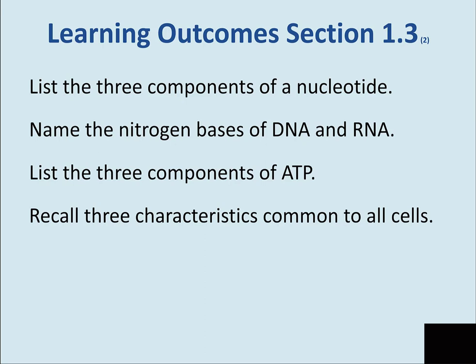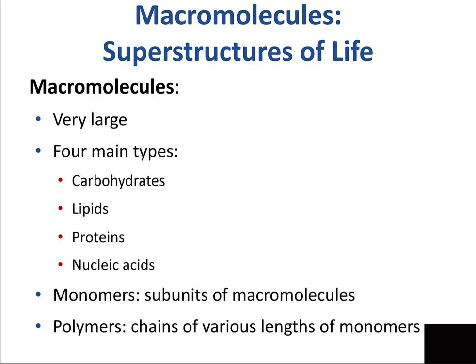We're going to talk about what a nucleotide is and its components. The terminology is important: there are nucleotides and nucleosides. A nucleotide has three components, a nucleoside has two. We'll also name the nitrogen bases of DNA and RNA, which you should already know but it's good to review, and discuss the three components of ATP and characteristics common to all cells.